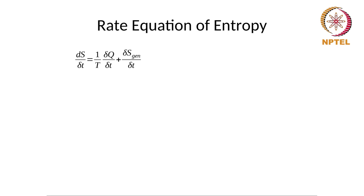We will now move on to the rate equation of entropy. Similar to how we looked at the first law as dE = δQ - δW and then derived its rate equation, we can now look at the rate equation of entropy. We have dS = (1/T)δQ + δS_gen. Dividing everything by dt gives us dS/dt = (1/T)·Q̇ + Ṡ_gen.